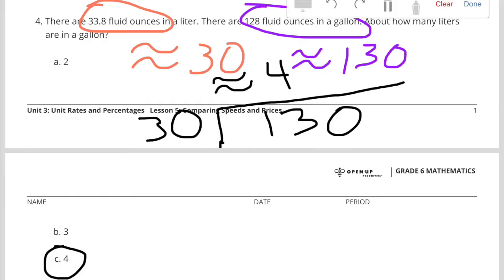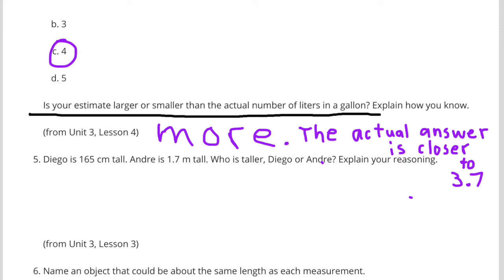So the answer that I'm going to select is C, 4. Is your estimate larger or smaller than the actual number of liters in a gallon? Explain how you know.